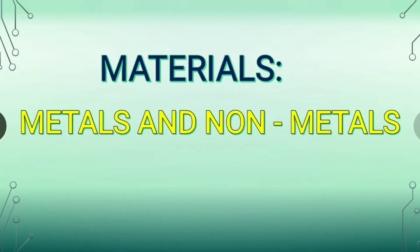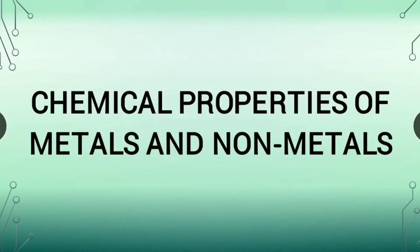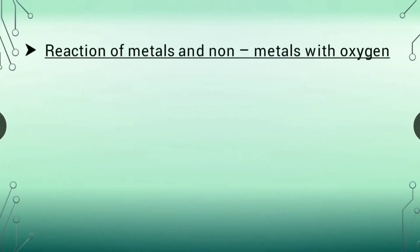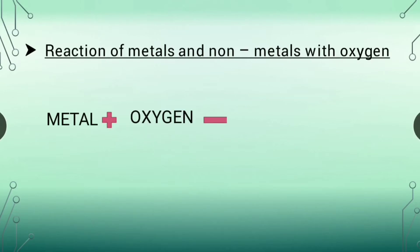Through previous videos we learned about physical properties of metals and non-metals. Now today we will know about chemical properties of metals and non-metals. Metals and non-metals react differently with other compounds. The kind of reaction they undergo and the products formed determine the chemical properties of each metal and non-metal. Let's see how metals and non-metals react with oxygen.